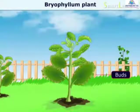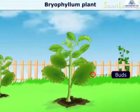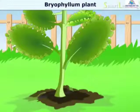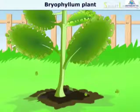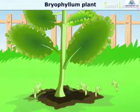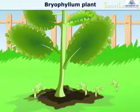Bryophyllum has buds in the margin of the leaves. If a leaf of this plant falls on moist soil, a new plant can grow from each bud. Bryophyllum leaf is an example of vegetative propagation.